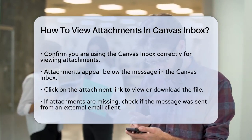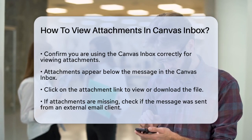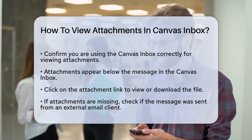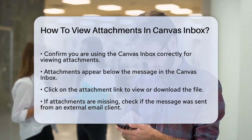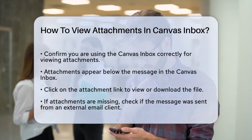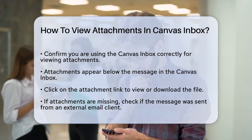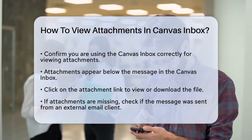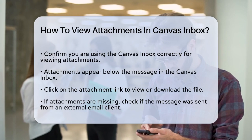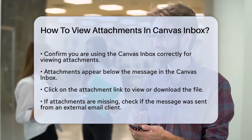First, make sure you're using the Canvas Inbox correctly. When someone sends you a message with an attachment through the Canvas Inbox, the attachment should appear below the message. To view it, simply click on the link to the attachment.